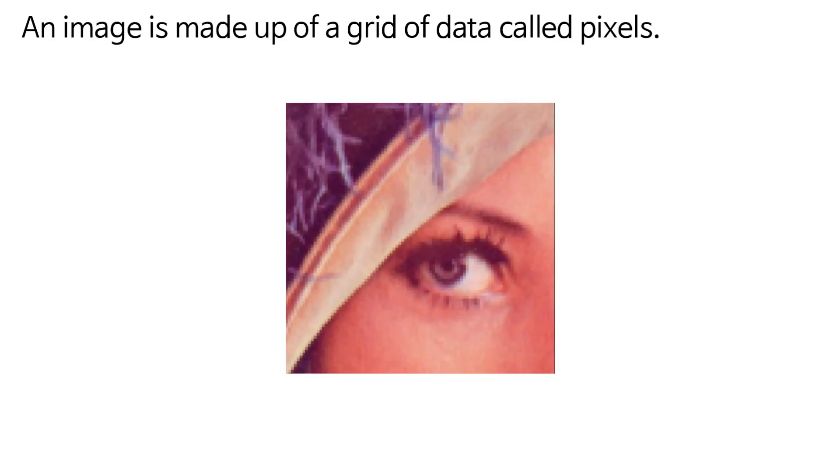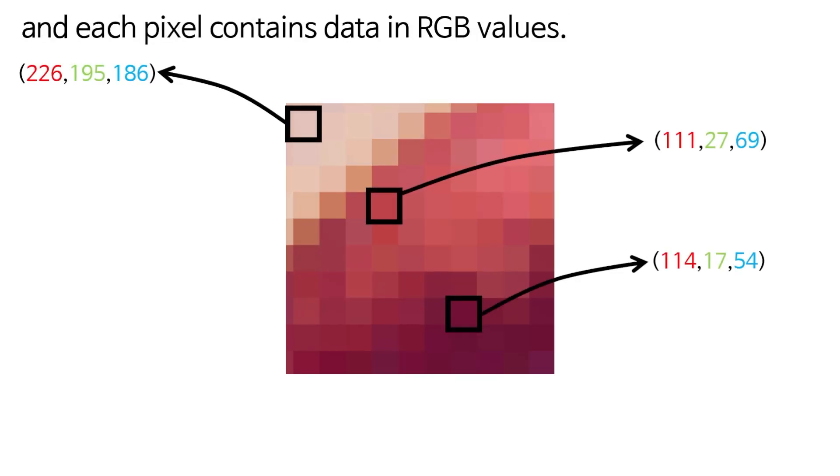An image is made up of a grid of data called pixels, and each pixel contains data in RGB values.